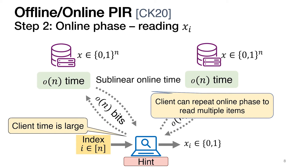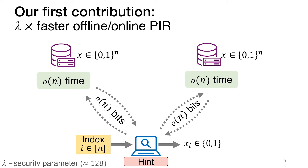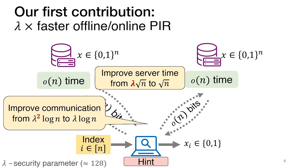One downside of our offline-online PIR protocol is that it is relatively costly in terms of client time. The first contribution in the current paper is a faster offline-online PIR protocol. Specifically, we improve both the online communication and the online server time by a factor of λ, the security parameter, which translates to more than 100x savings in practice. The main idea is that the factor λ in the old protocol was due to its imperfect correctness — we had to repeat the basic protocol λ times to drive the failure probability to be negligible. In the current work, we managed to build a new protocol that doesn't have any correctness error, so we don't need those λ repetitions anymore.